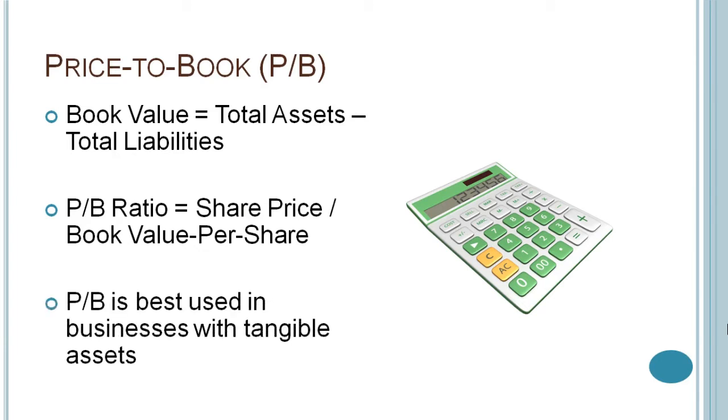The price to book ratio is a useful metric for companies with primarily tangible assets such as a manufacturing business or a bank or even an insurance company. It's not very useful in valuating companies that rely heavily on intangible assets. Some intangible assets might be like brands or trademarks. So most technology companies and most pharmaceutical companies, you wouldn't use the price to book ratio for those stocks because most of the assets are intangible.